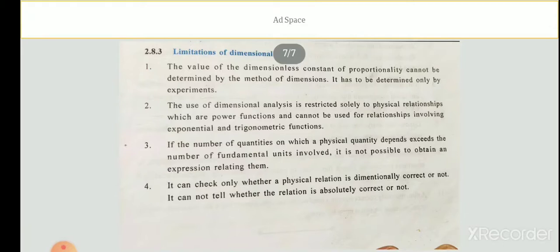Fourth, dimensional analysis can only check whether a physical relation is dimensionally correct or not. As noted in the second application, a dimensionally incorrect equation is always wrong, but a dimensionally correct equation is not always an exact correct equation. These are the four limitations of dimensional analysis.